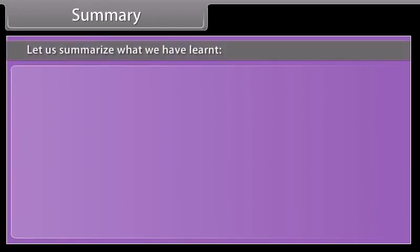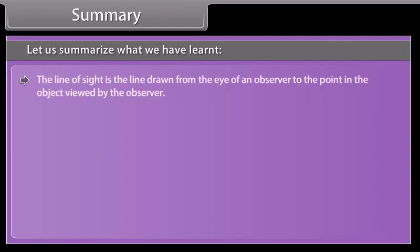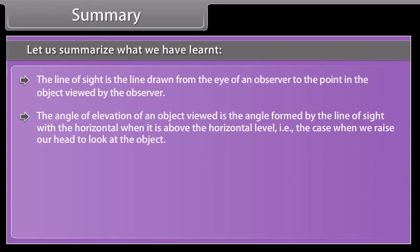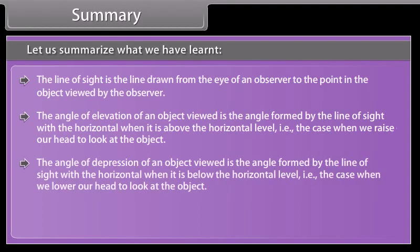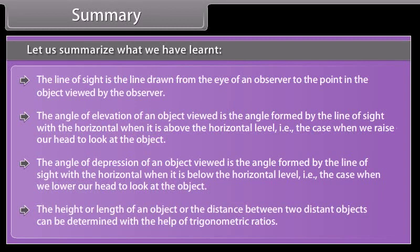Let us summarize what we have learned. The line of sight is the line drawn from the eye of an observer to the point in the object viewed by the observer. The angle of elevation of an object viewed is the angle formed by the line of sight with the horizontal when it is above the horizontal level. That is, the case when we raise our head to look at the object. The height or length of an object or the distance between two distant objects can be determined with the help of trigonometric ratios.